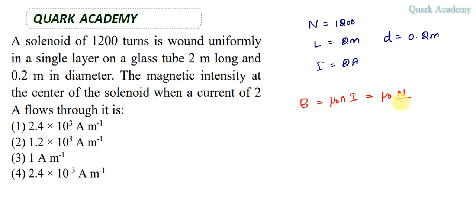field. So magnetic intensity, which we write as H, is B divided by μ₀. So this becomes n times I, which equals capital N divided by L times I. So let's substitute